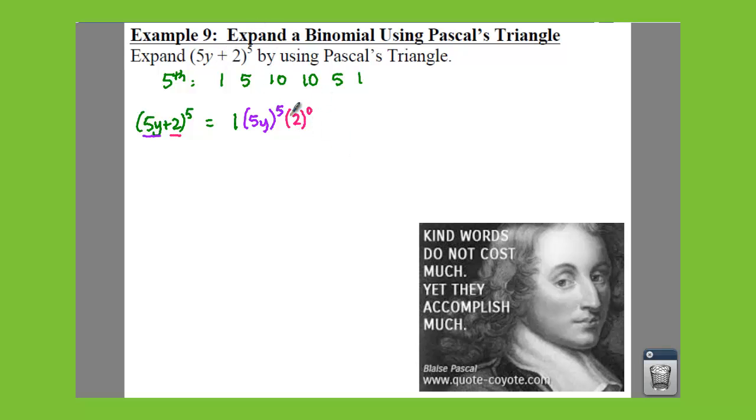So we have a plus here, so we're not going to be alternating our signs. We're going to have a 5 as our coefficient. And then we say 5y to the fourth, 2 to the first.